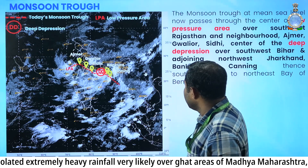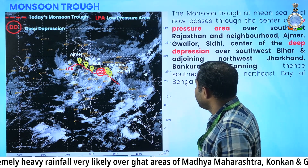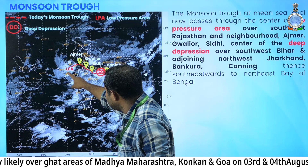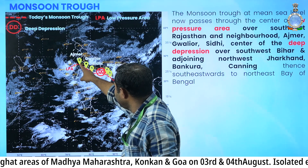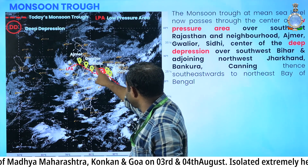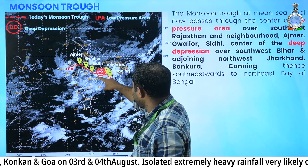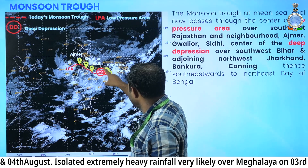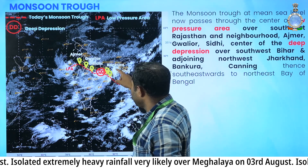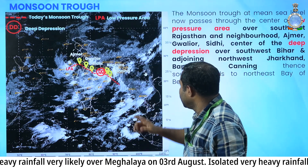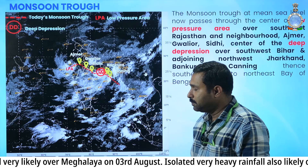The monsoon trough now runs from the low pressure area over southwest Rajasthan, then to Ajmer, Gwalior, Siddhi, through the deep depression, then to Bongaigaon, then to Kanniyng, and into the Bay of Bengal.